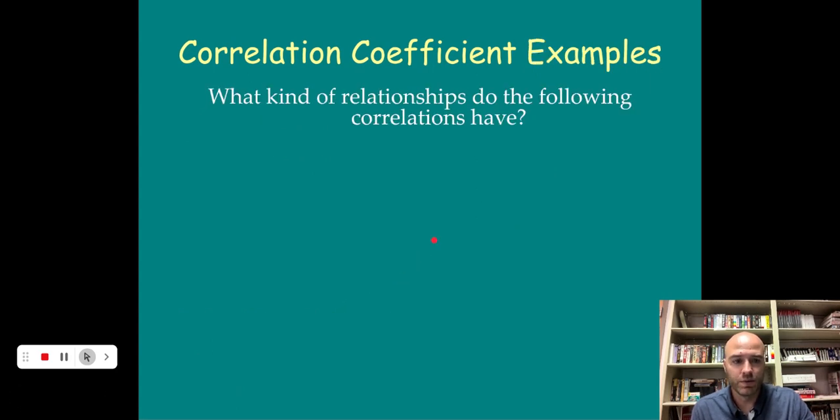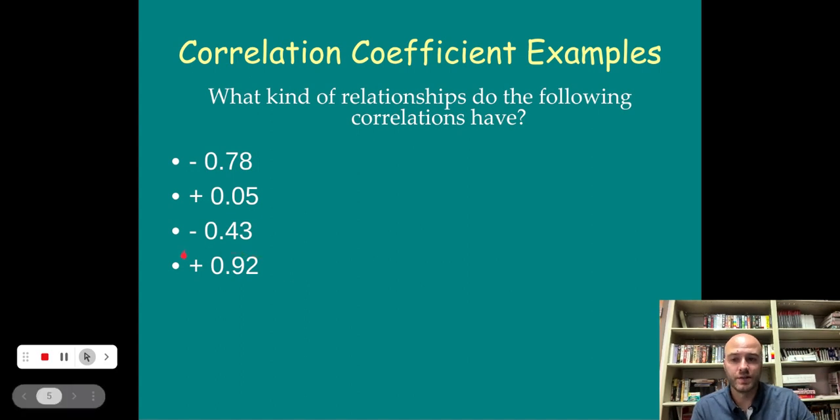Let's look at some examples. Feel free to pause. What kind of a relationship do the following correlations have? Negative 0.78. That's going to be a relatively strong negative correlation. Positive 0.05. That's a very weak, almost no correlation, very weak positive correlation. Negative 0.43, a moderate negative correlation. And positive 0.92, that's a very strong positive correlation.